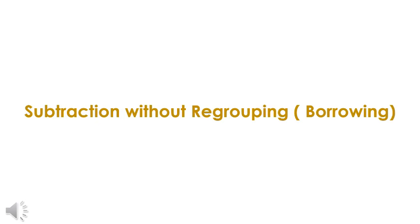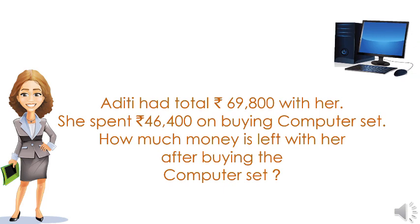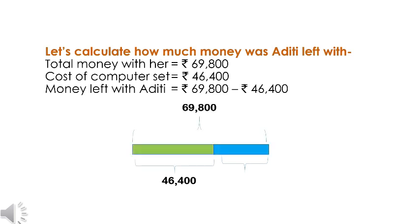Now let us understand subtraction without regrouping, which means subtraction without borrowing. Aditi had a total of rupees 69,800. She spent rupees 46,400 on buying a computer set. How much money is left with her? Total money with Aditi is rupees 69,800 and the cost of the computer set is rupees 46,400. To find the leftover money, let us take away 46,400 from 69,800.